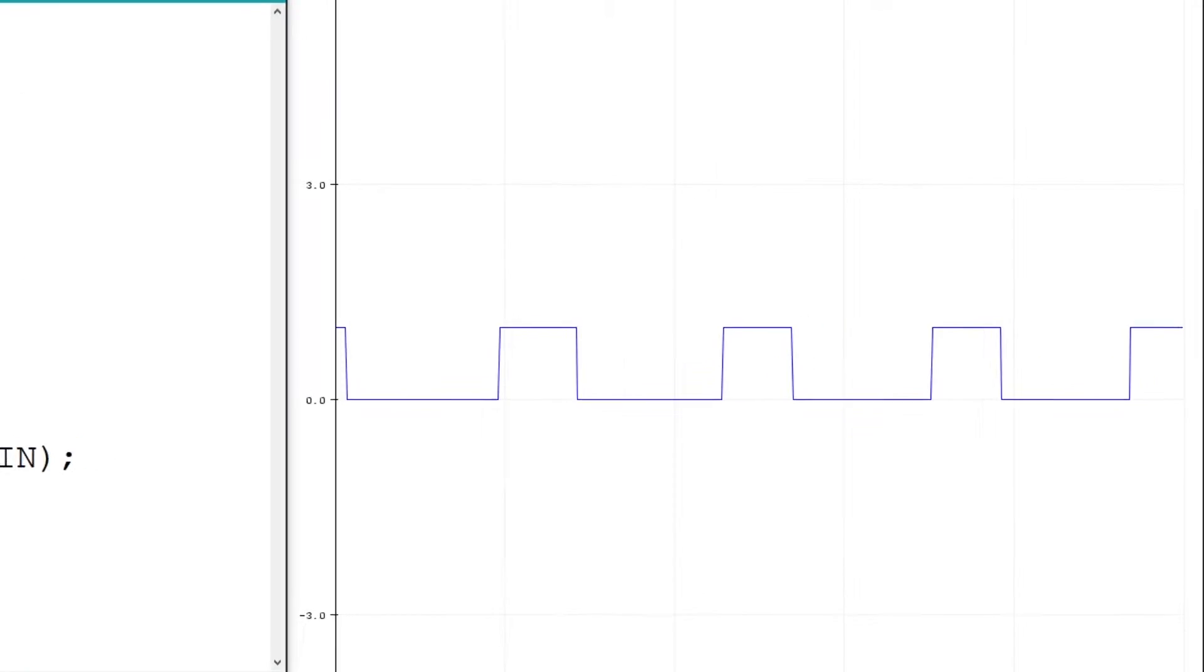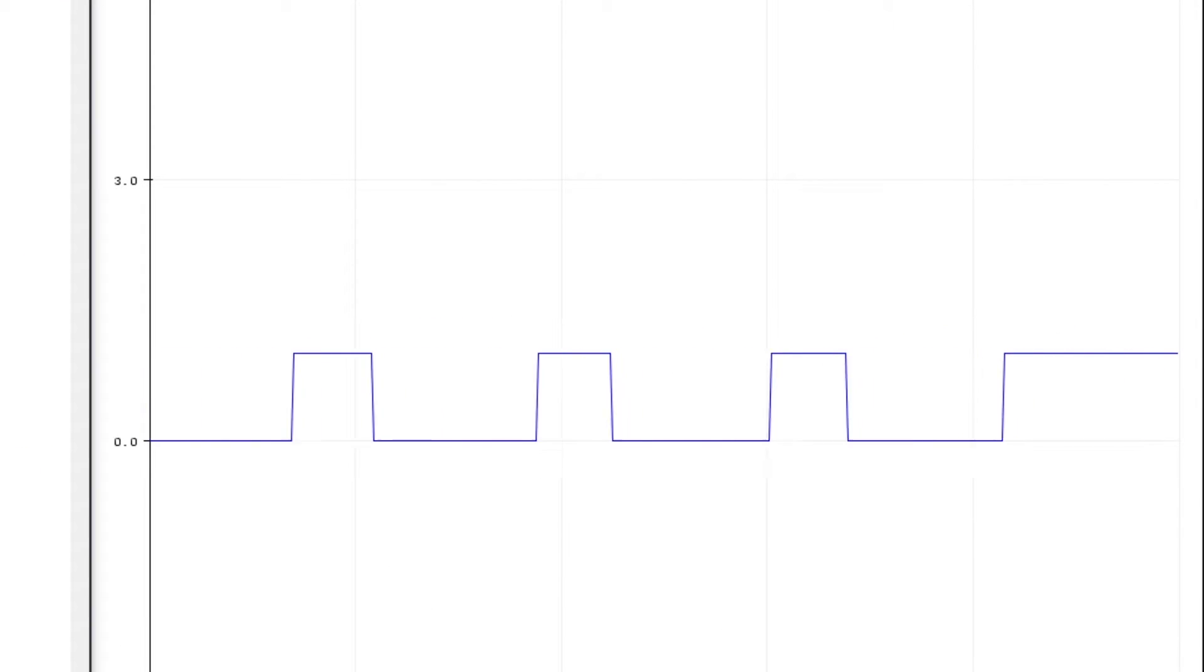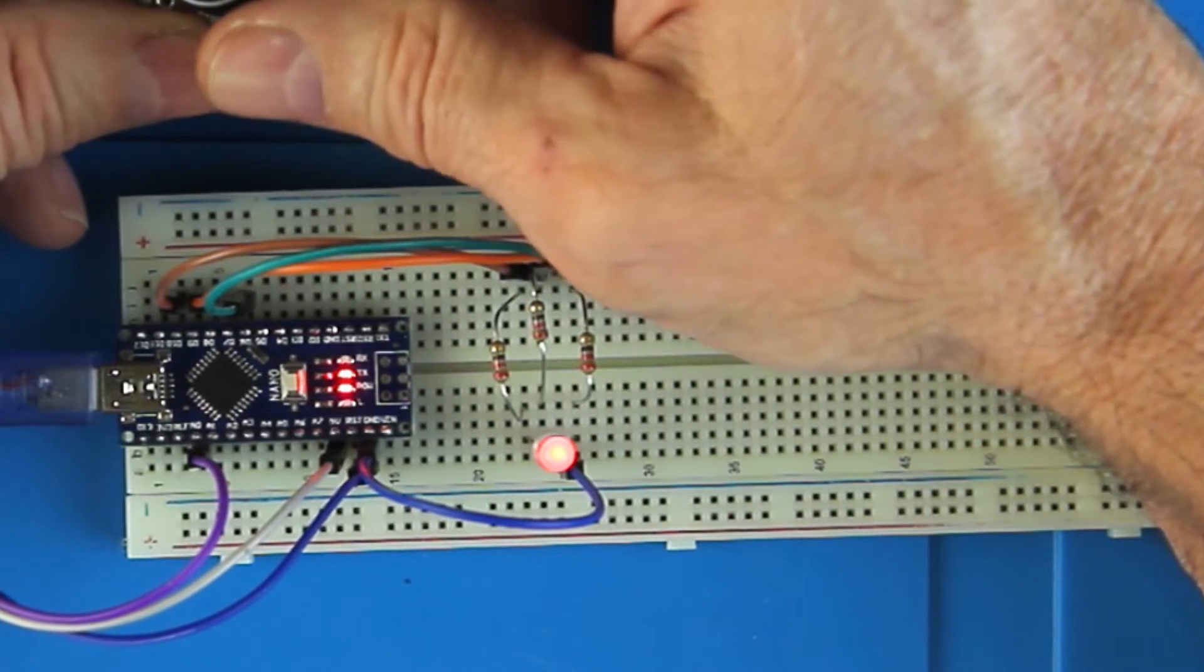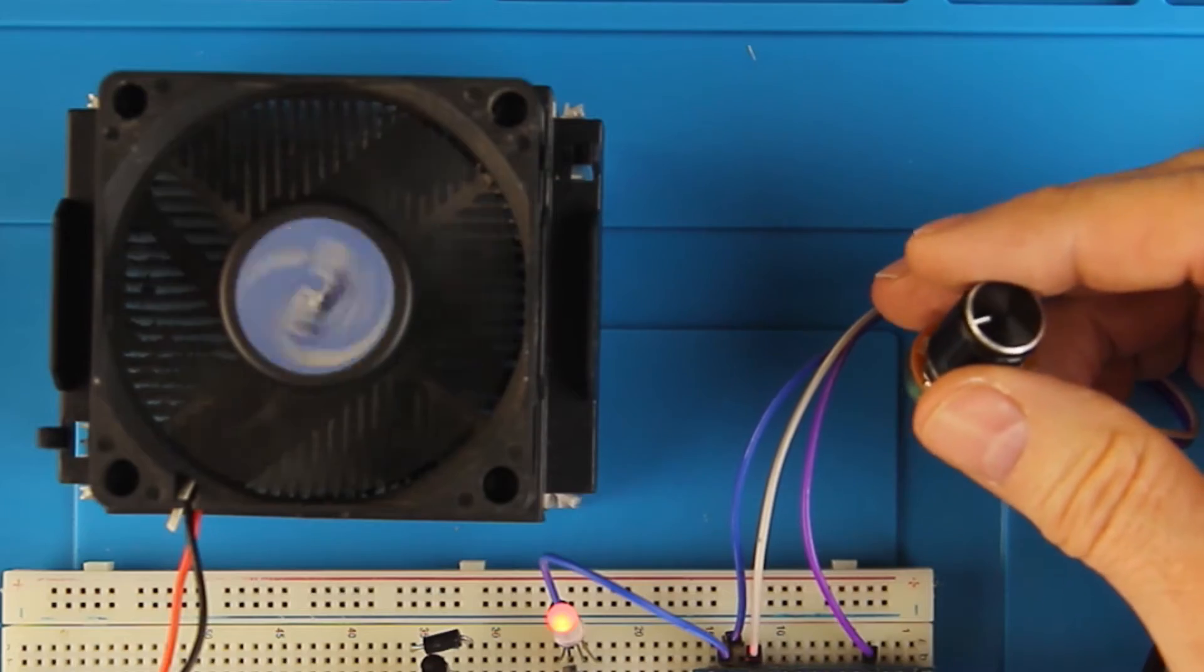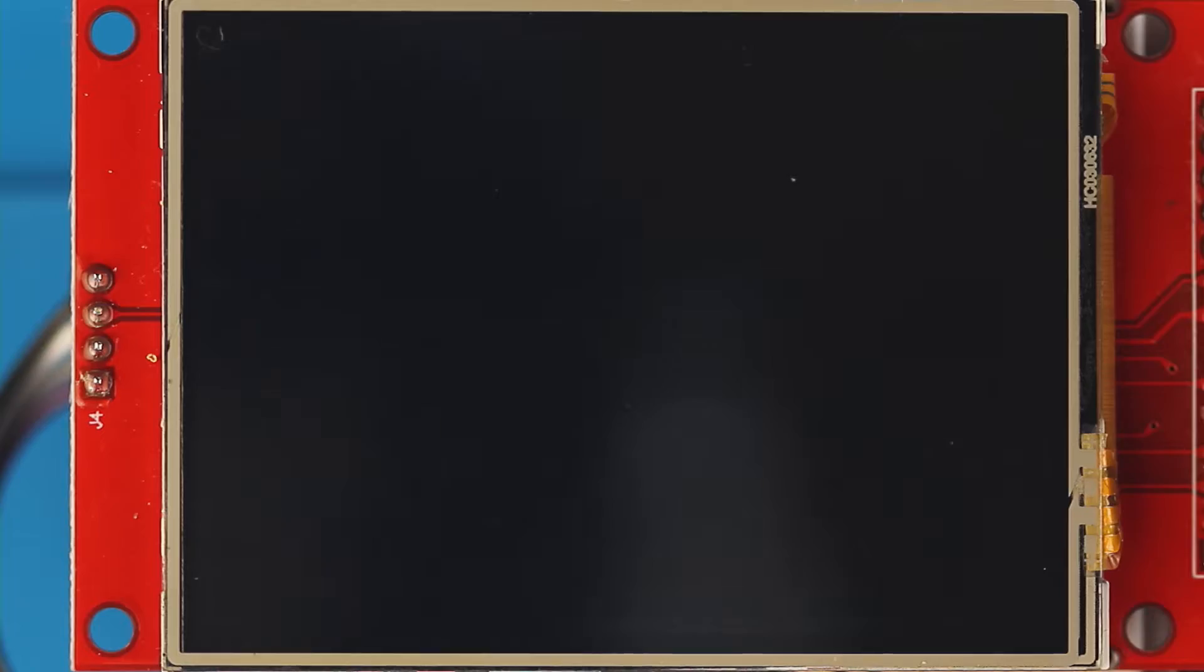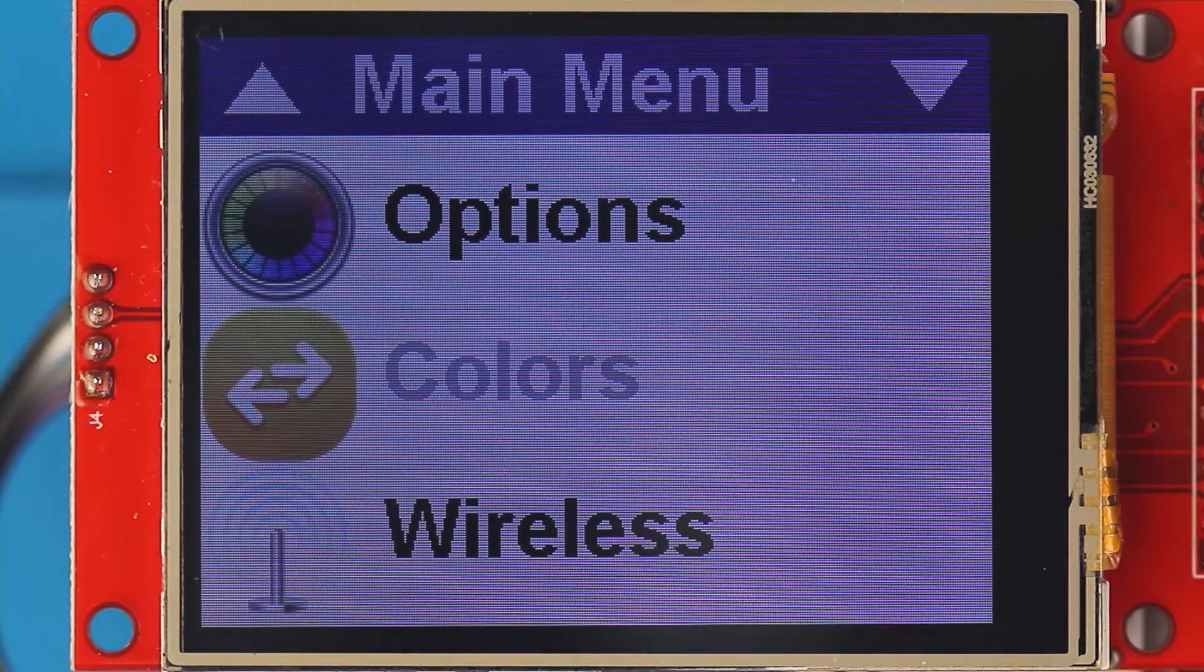So far we have focused on reading analog and digital signals. This week we'll learn how to write an analog signal. Analog signals vary in magnitude so they're perfect for changing LED brightness, varying fan speed, or dimming stuff like LCD displays.